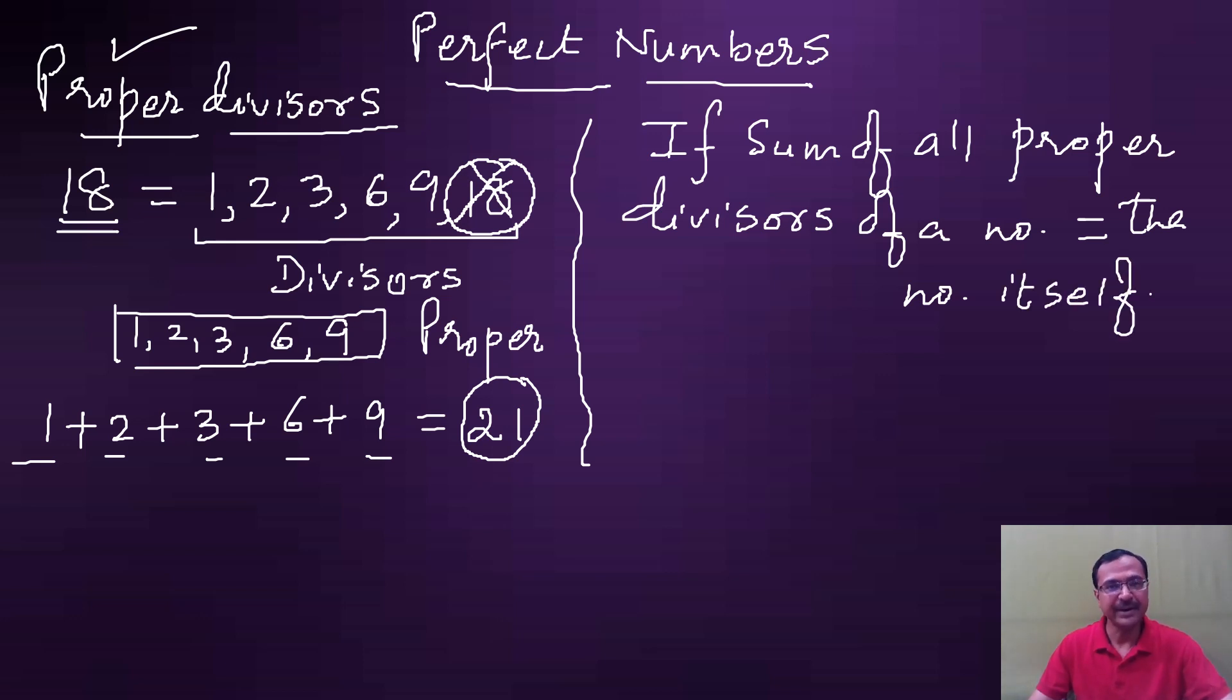I'll give you an example. Take 6. The various divisors of 6 are 1, 2, 3, and 6. But since I want to take only the proper divisors, I will not consider the number itself. So the proper divisors are 1, 2, and 3. If you add 1 plus 2 plus 3, you get 6, which is equal to the number itself. Therefore, 6 is a perfect number.